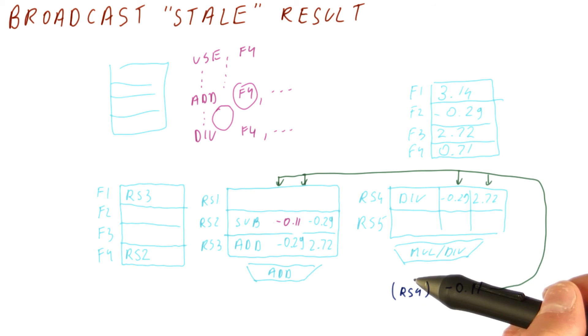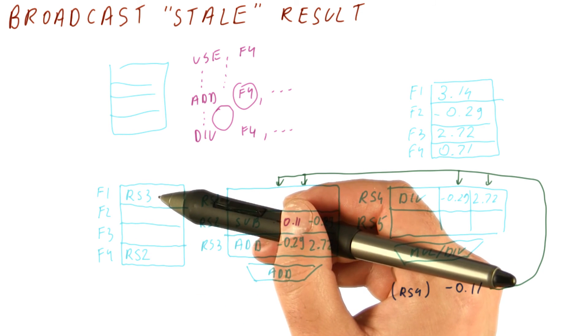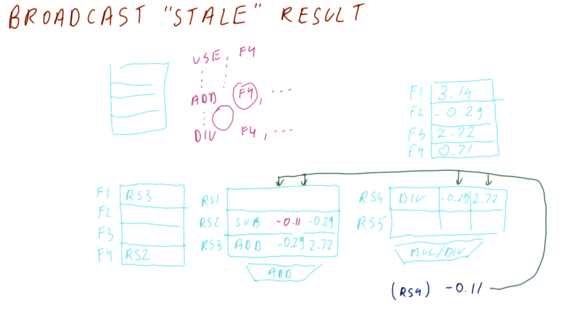So pretty much, if the tag that is being broadcast doesn't match any of the entries in the RAT, then we don't update the RAT and we don't update the register file. And it is perfectly fine because all of the instructions that possibly need this value are already in reservation stations.